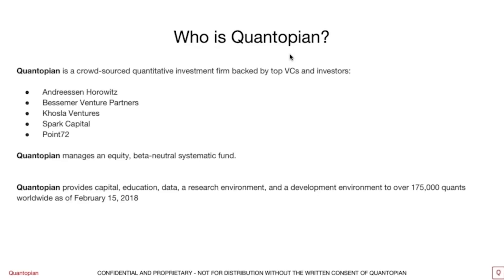We are a crowdsourced quantitative investment firm backed by venture capital. We manage a market neutral systematic fund — fully systematic, fully automated, and focused on U.S. equities. As a platform, Quantopian.com provides capital, data, education, and a research environment for you to develop quantitative U.S. equity focused trading strategies. As of February 15th, 2018, we have over 175,000 quants on our platform.